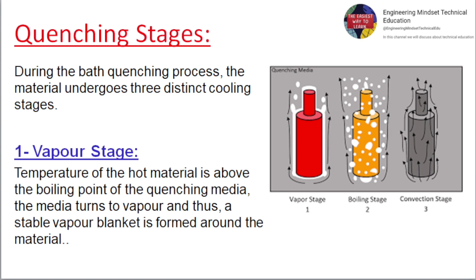Quenching stages. During the bath quenching process, the material undergoes three distinct cooling stages. 1. Vapor stage: the temperature of the hot material is above the boiling point of the quenching media. The media turns to vapor, and a stable vapor blanket is formed around the material.